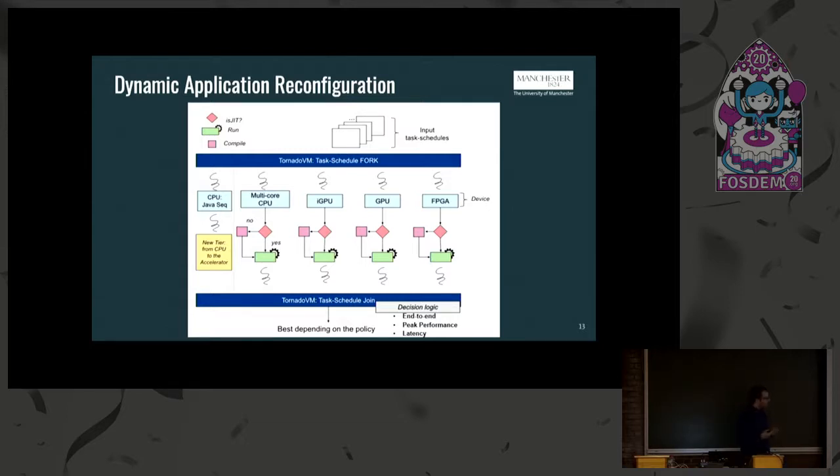And after doing that we are able to apply some policies. With these policies we are able to decide what we want to do. Do we want, for example, the first thread that will compile and execute to be the only thread that will execute and then kill all the rest? This is the latency policy, which is intended for applications that are very critical for latency. The other one is the end-to-end which includes time for compilation and execution. And the other one is peak performance, which is the policy that has only the data transfers in and out and execution.